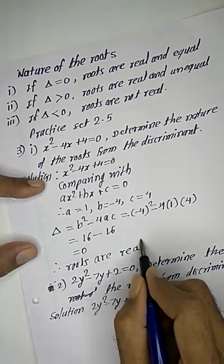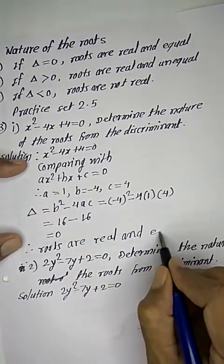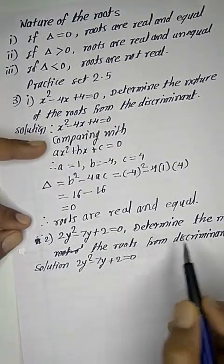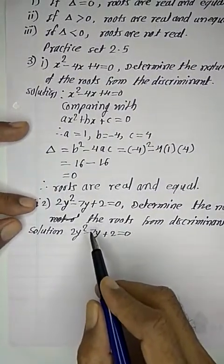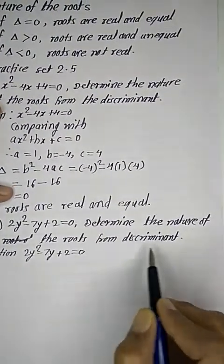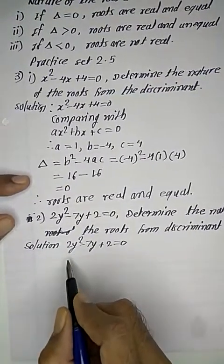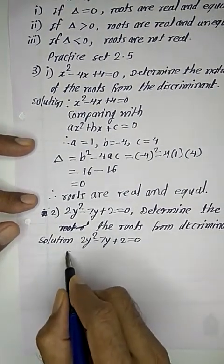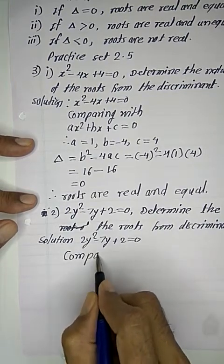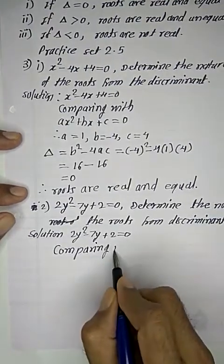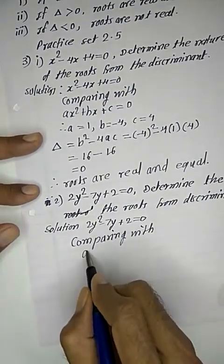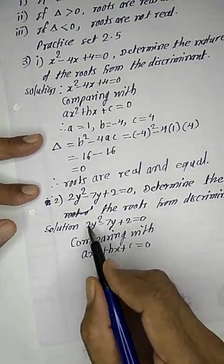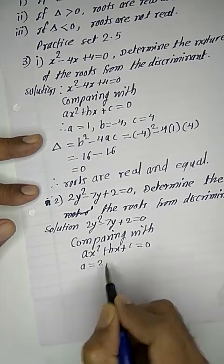Same example type: 2y² - 7y + 2 = 0. Determine the nature of the roots from the discriminant. Solution: Given example is 2y² - 7y + 2 = 0. Comparing with ax² + bx + c = 0.